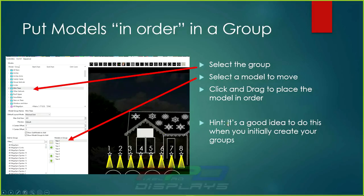Here's a hint: it's a good idea when you create your groups to set this up ahead of time. Once it's set up it's done. You can go through your entire layout and put models in specific order — you could do this with your verticals, all your windows in the windows group, your icicles. Imagine cascading all your icicles to have a chase effect over the top of them — that would be a rather dramatic look whenever you have a quick chase with a delayed start.